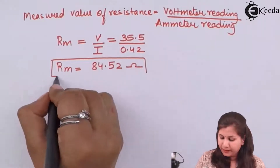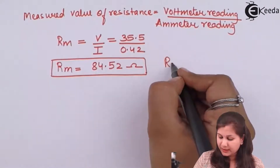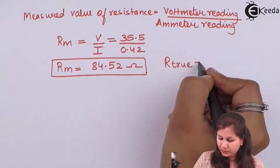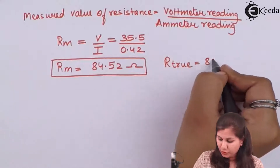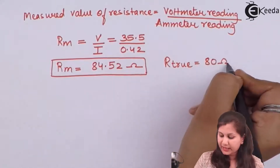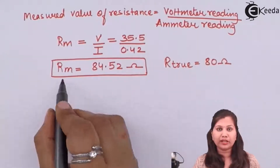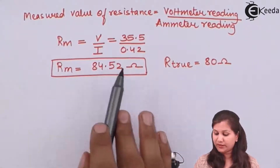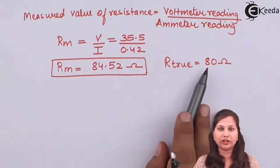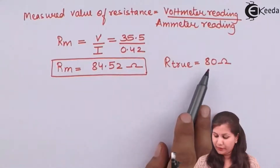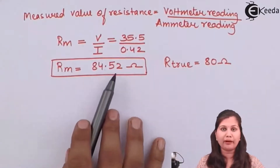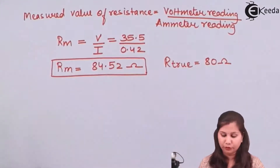But the true value of the resistance is 80 ohms, so there is an error. The measured value is greater than the true value by the amount 4.52.